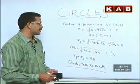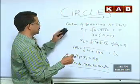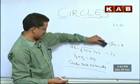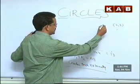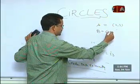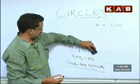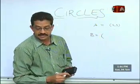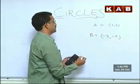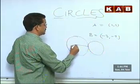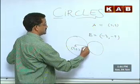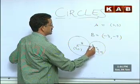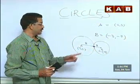Now he is asking for the point of contact. Let me show you a figure. The first center A = (2, 3) and the second center B = (−3, −9). This is the first circle with radius 5 and the second circle with radius 8. They are touching externally as we just proved. We need to find the point of contact.